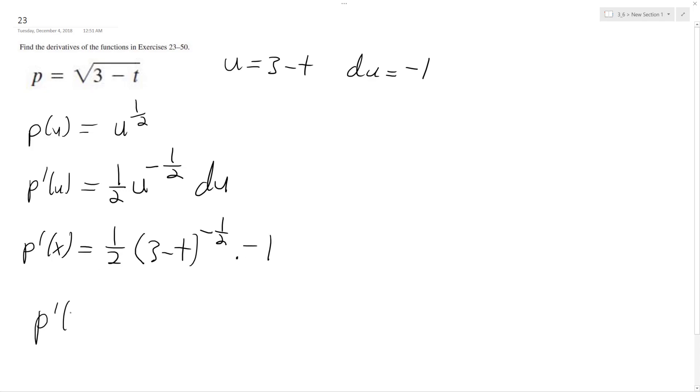So completely, this will be p of x, or just p prime, I should say, is equal to negative 1 over 2 times the square root of 3 minus t, which is the same thing as 3 minus t raised to the negative 1 half.